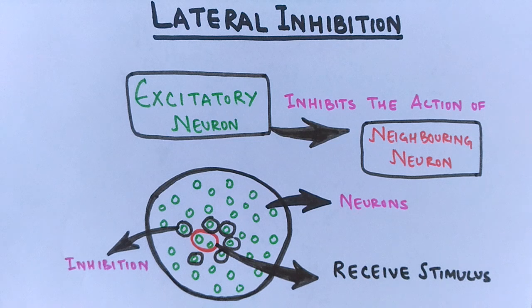The excitation of specific neurons inhibits the stimulation or excitation of neighboring neurons, so that our brain pinpoints where the actual stimulus is coming from.